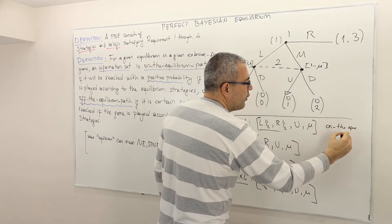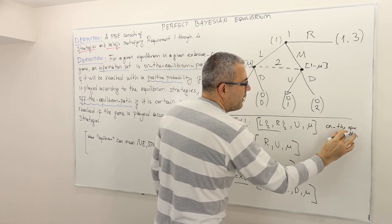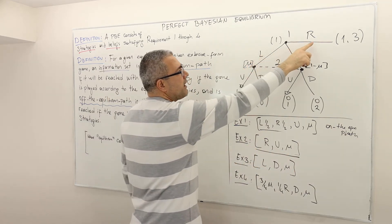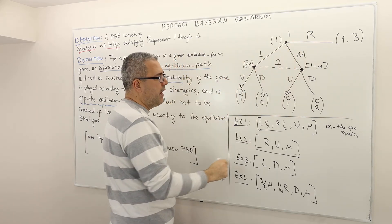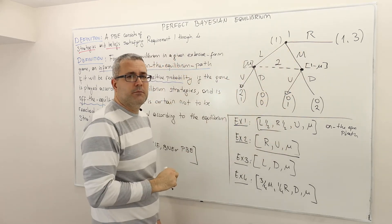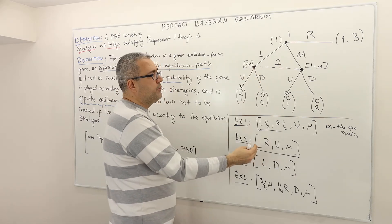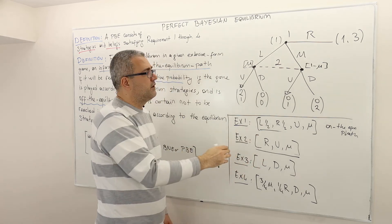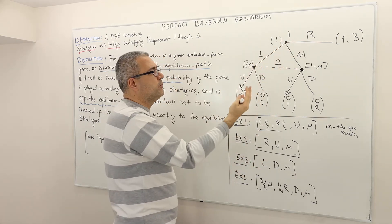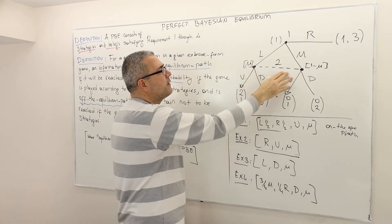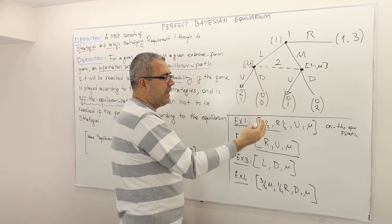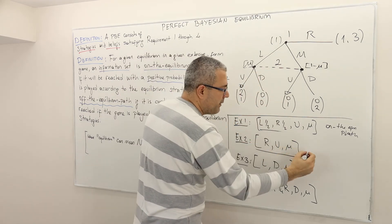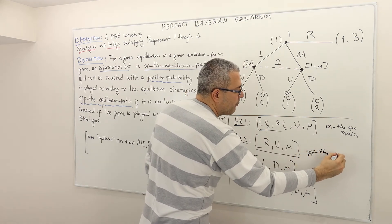What about this equilibrium strategy profile? Player one is supposed to play right with probability one, and player two plays U with belief system mu. According to this strategy profile, player one is not supposed to play left at all. So the probability that the game will ever reach this information set is zero. Therefore, this information set is off the equilibrium path.